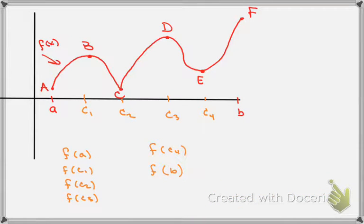So in a problem, the way we would have to do this is that first of all, we'd have to find our critical values, c1, c2, c3, and c4. And just remember that those occur when the derivative is equal to 0 or the derivative is undefined.